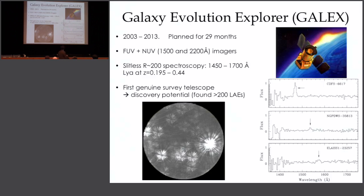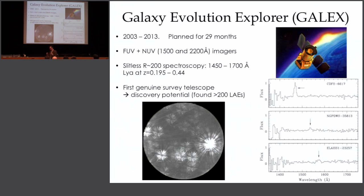Spectra looked like this — a nice bright one here. This was slitless spectroscopy, so it's just imaging with a disperser in the way, taking a spectrum of every object on the sky. You disperse light in a certain direction, then at a different roll angle you disperse again, across many different angles. You can reassemble very nice spectra. Fainter ones look like this and like this. This was really the first machine that led us to survey for Lyman-Alpha emitters at low-Z.